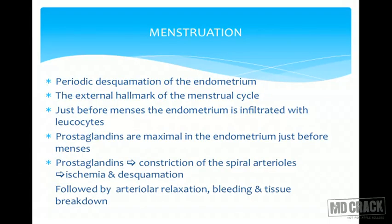Once estrogen and progesterone are withdrawn at the end of the secretory phase, there is vasoconstriction and desquamation of the endometrium — the external hallmark of the menstrual cycle. Just before menses, the endometrium is infiltrated with leukocytes. Prostaglandins are maximal in the endometrium just before menses, causing constriction of spiral arterioles. The resulting ischemia leads to desquamation, followed by relaxation of arteries after vasoconstriction, which leads to bleeding — the blood and tissue coming out as menstrual blood.